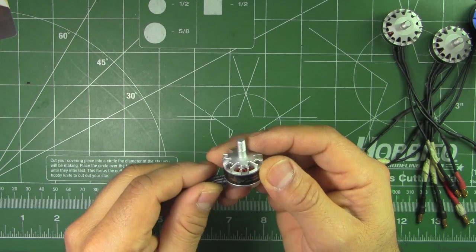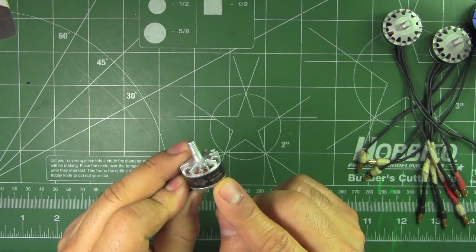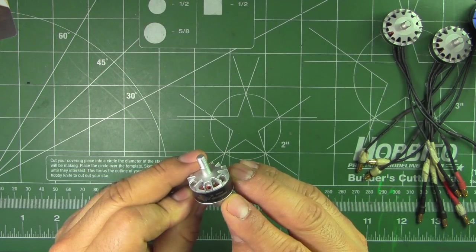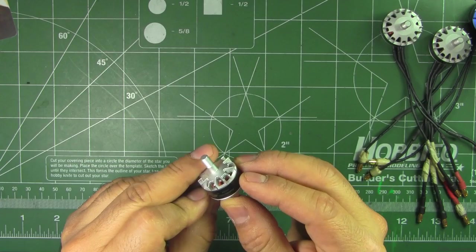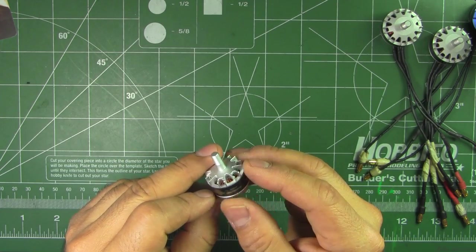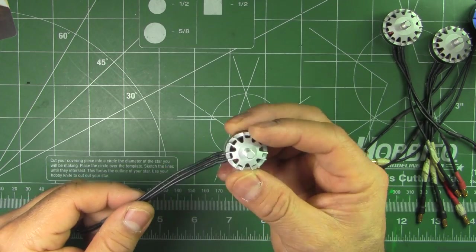I wish it had been a little bit higher KV, maybe 2500 or so for four inch props.